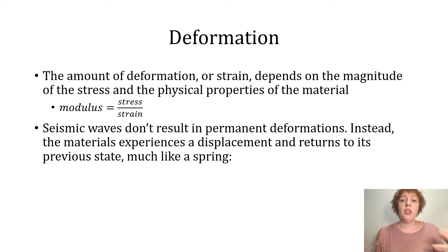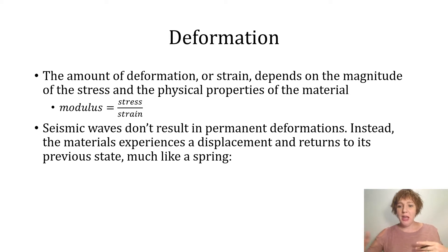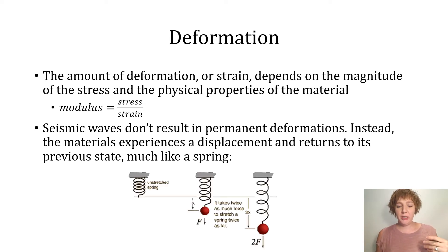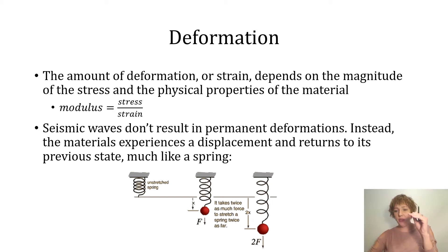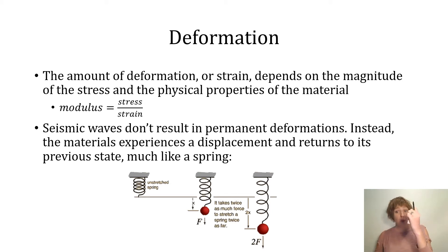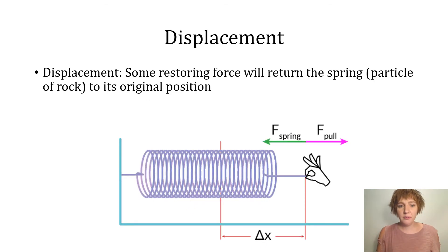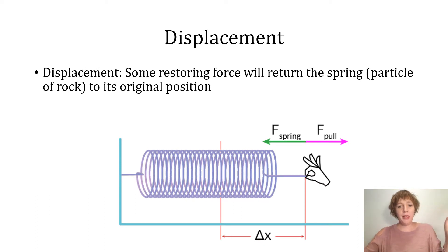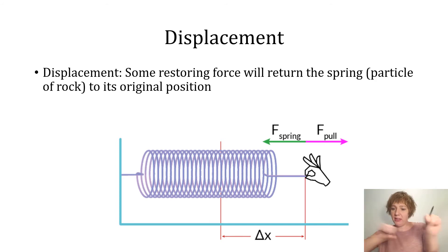Seismic waves don't result in permanent deformations. Instead, the material experiences a displacement and then returns to its previous state, much like a spring does. In this example, we have an unstretched spring, then we apply a force and it stretches; we apply a bigger force and it stretches more. While it's undergoing this displacement, there's actually a restoring force that will work to bring it back.